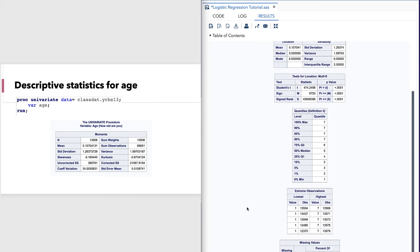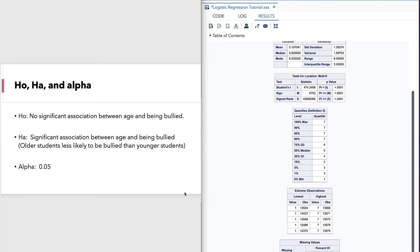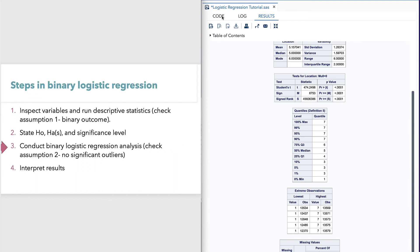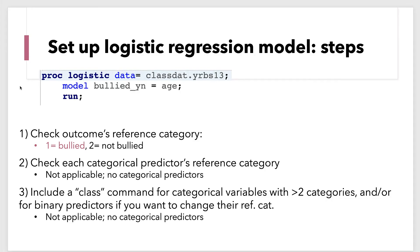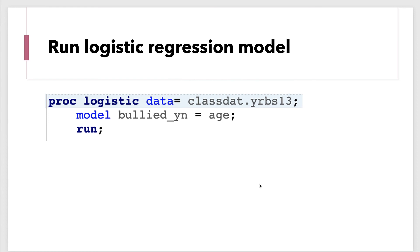Let's go ahead and run descriptive statistics for age. We can see it is indeed a scale variable. The null hypothesis is no significant association between age and being bullied. Our alternative hypothesis is that there is a significant association between these two variables. We'll set our alpha at 0.05. The model looks the same with a scale predictor as it did with our categorical predictors. Before we run the model, we check the outcome's reference category: 1 is bullied, 2 is not bullied. Since we want to model the lower coded value, we will not include a descending option. We have no categorical predictors, so our regression model will look straightforward.